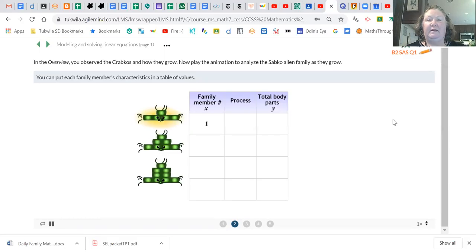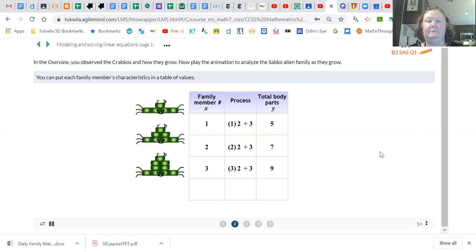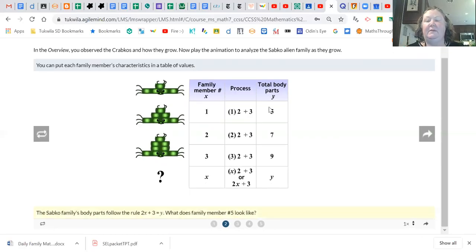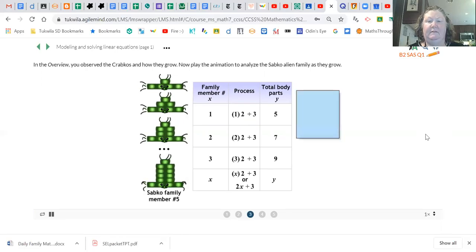So we can put their characteristics in a table of values. See if you notice the pattern in the equation in the middle. Okay, and just like our work in the overview, what is in the x column is going in the parentheses, and what's coming in the y column is the total.